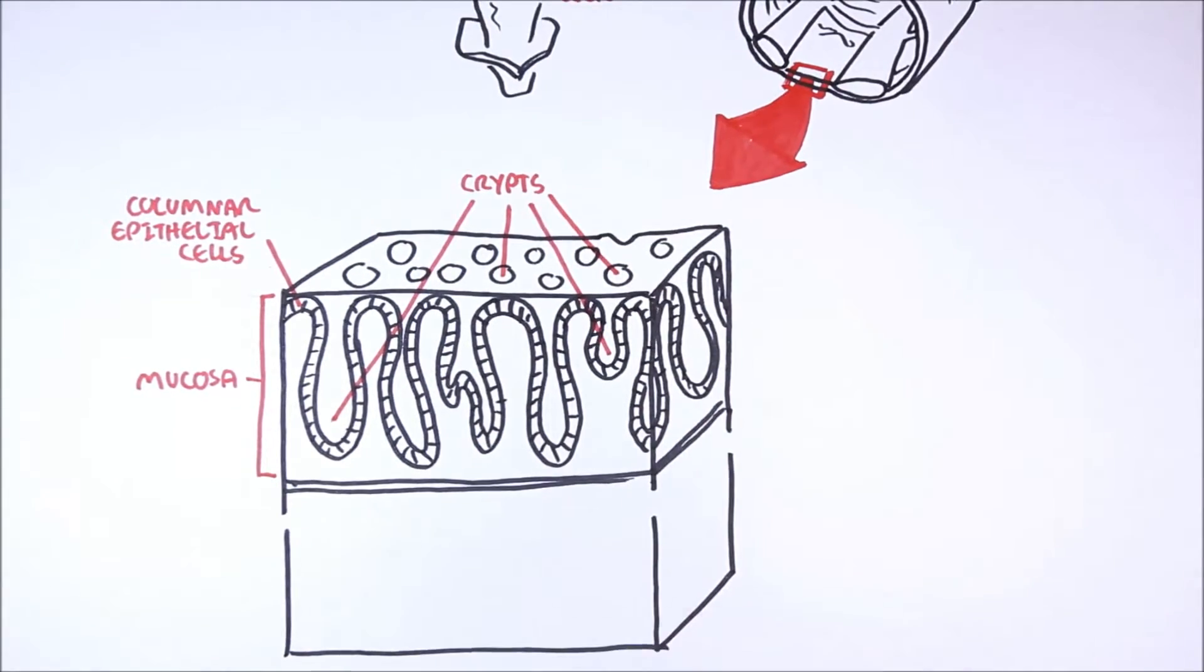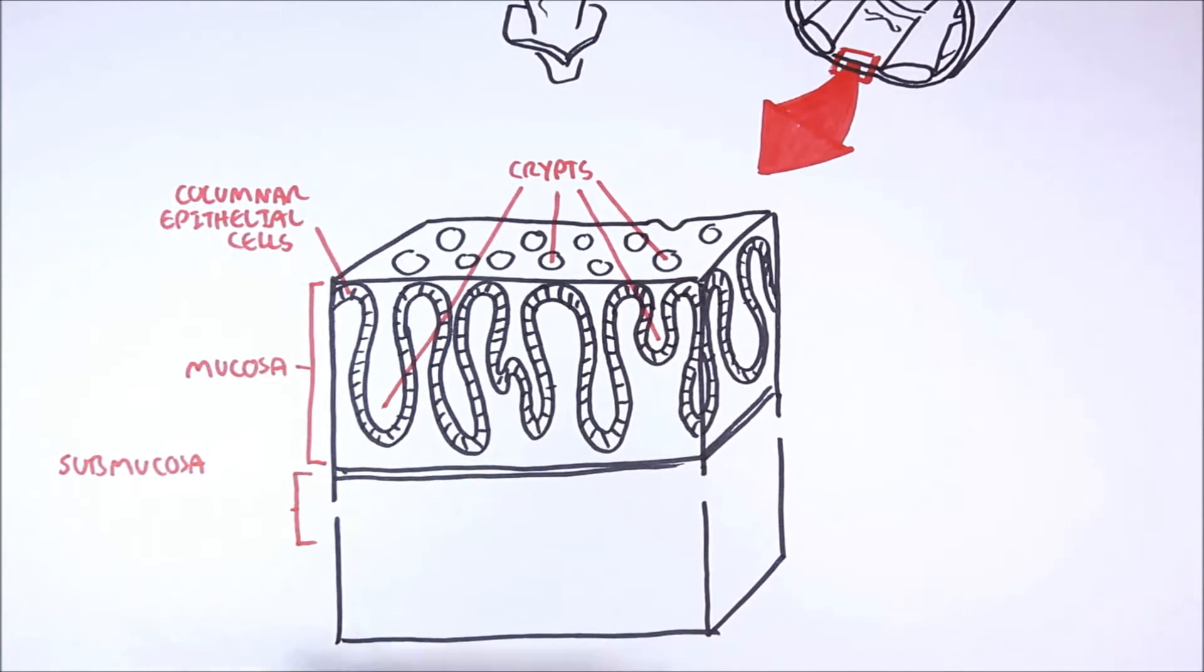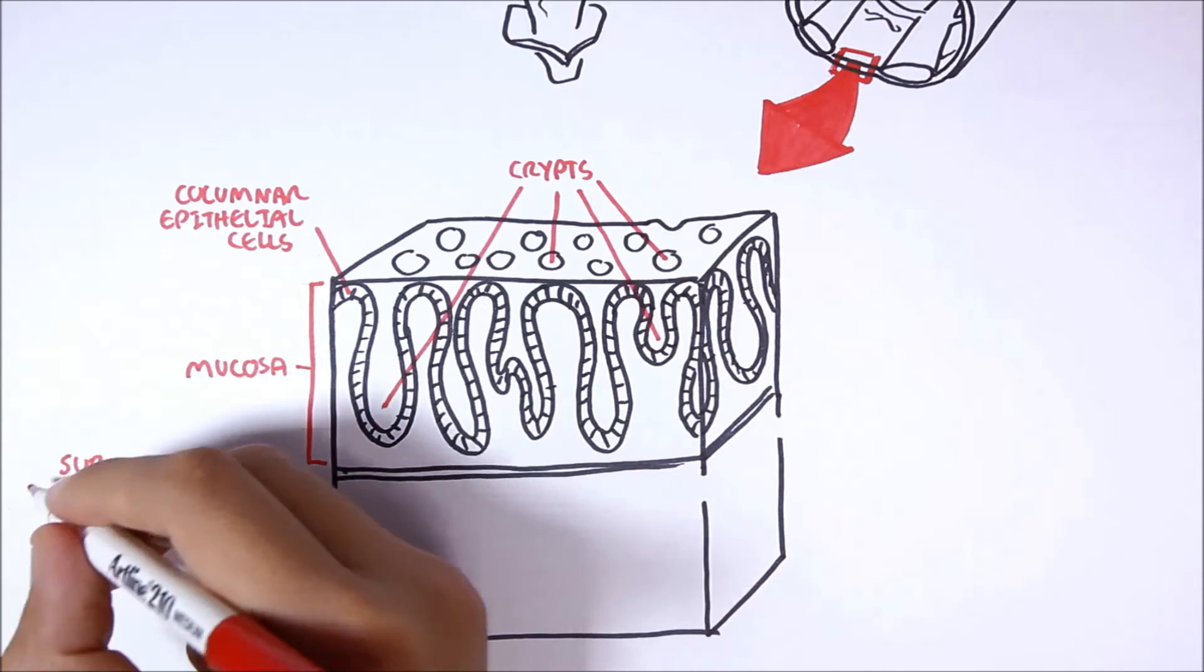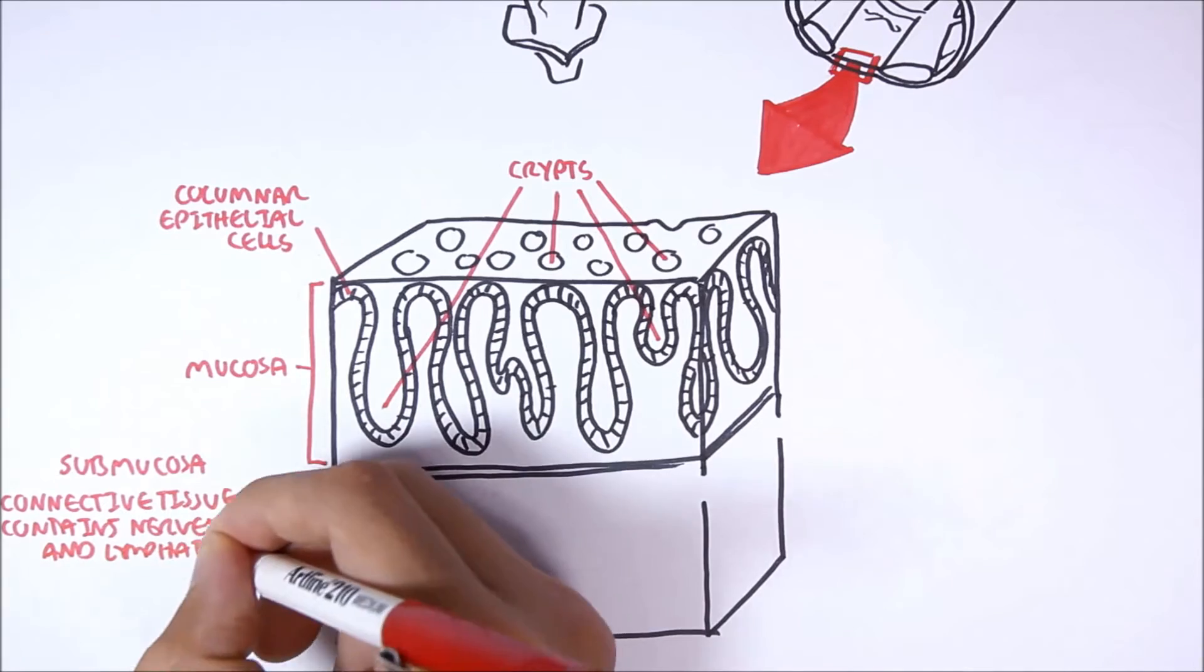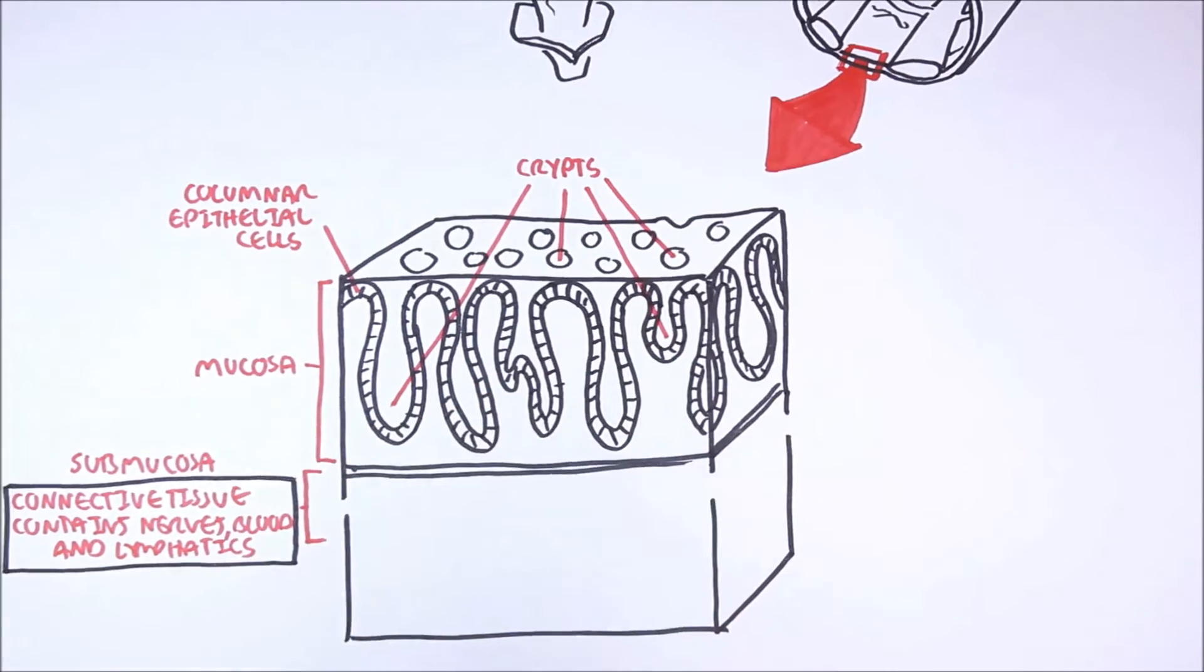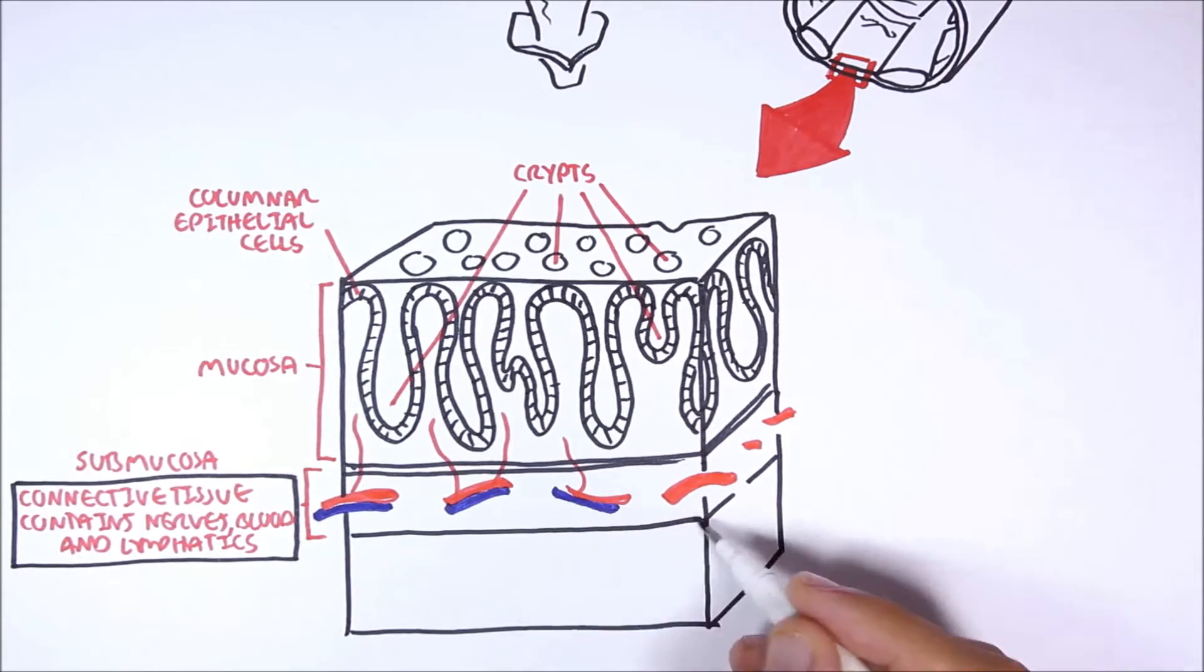The next layer is the submucosa, sub as in below, so below the mucosa. The submucosa is the connective tissue layer that contains nerves, blood supply, and lymphatics. Here we have the arteries that supply the cells and veins that leave the area.